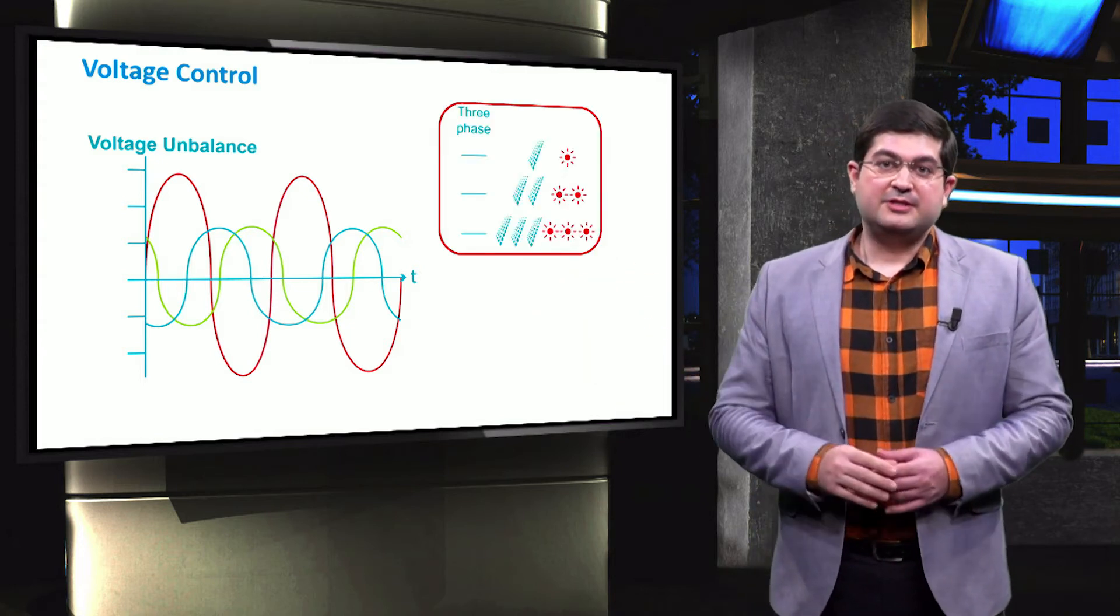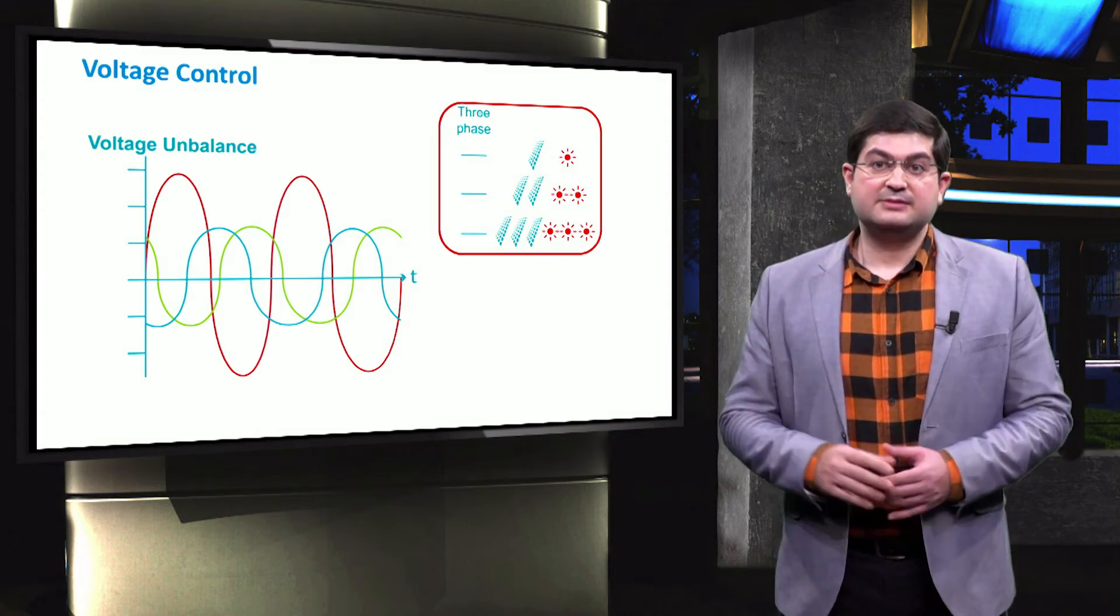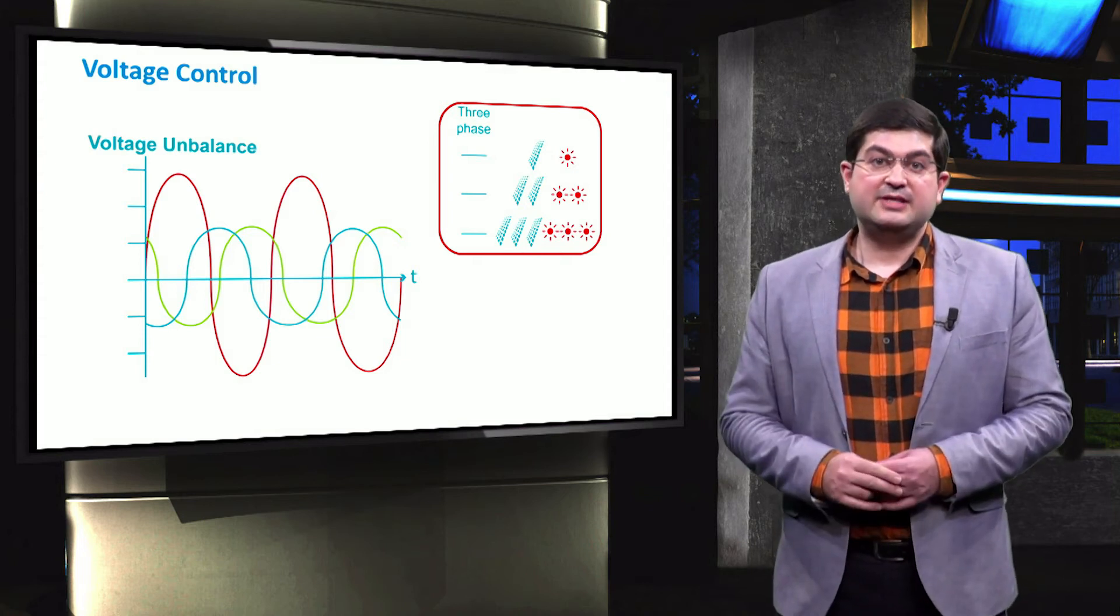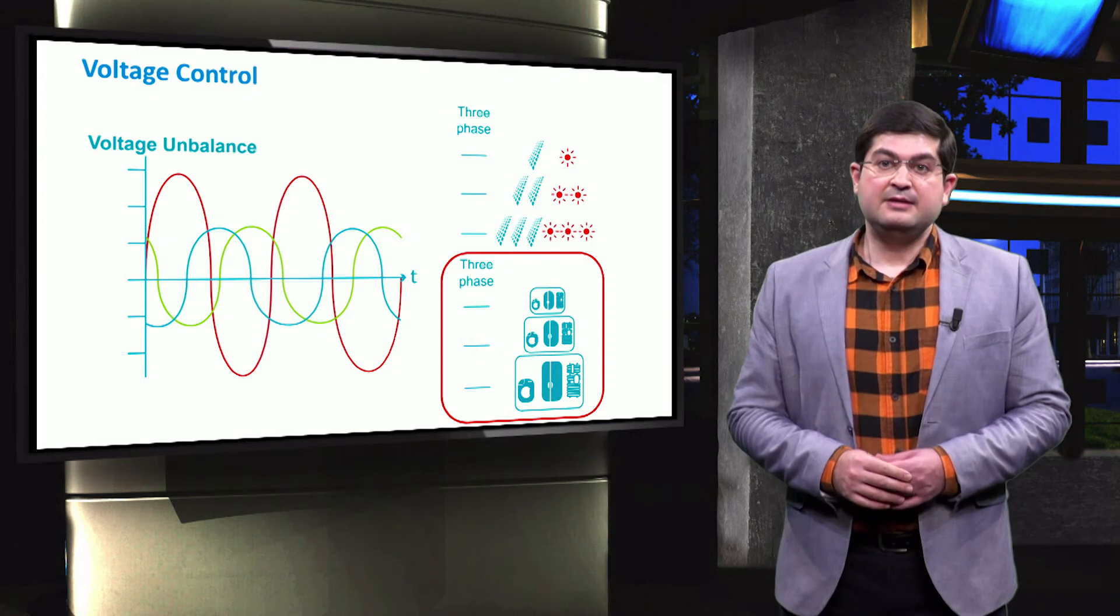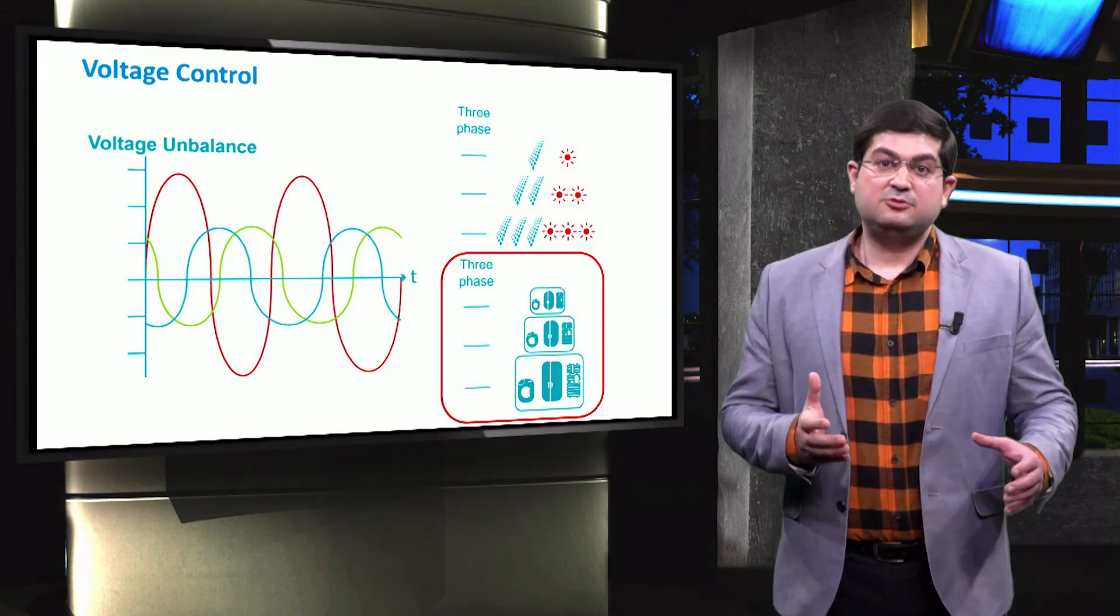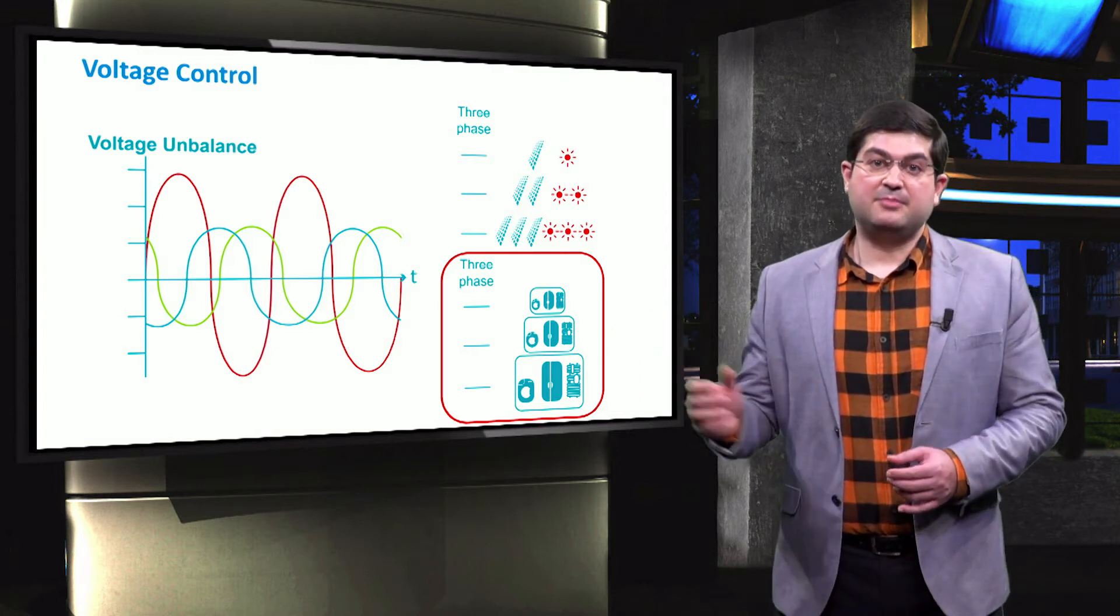Unbalanced voltage may occur due to different penetration rates of single-phase renewables, like photovoltaic solar, across different three phases of a microgrid. Unbalanced voltage can also occur due to uneven distribution of single-phase loads across three phases in microgrids.